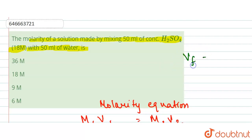The Vf will be equal to 50 ml of H2SO4 plus 50 ml of water. 50 plus 50 is equal to 100 ml. Now here we are given the molarity of the H2SO4, that is 18 molar.